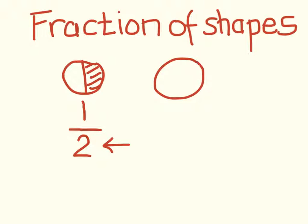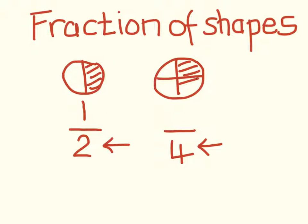If we get one whole one, but it's split into four pieces, the total number of pieces are four. So the total amount goes as your denominator. If it then asks you how much is shaded, you can then work out that there's one, two, three shaded, which becomes your numerator.